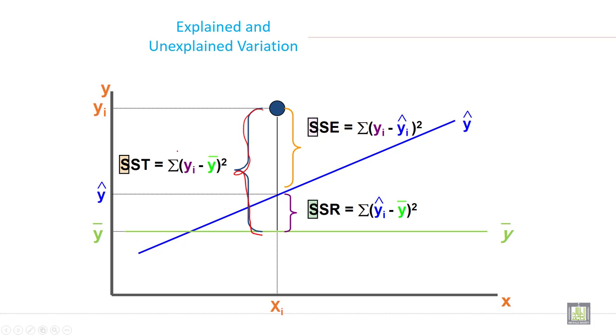What is explained and what is unexplained? This is explained variation and this is unexplained variation. Below the line, whatever gap you have is called unexplained variation.